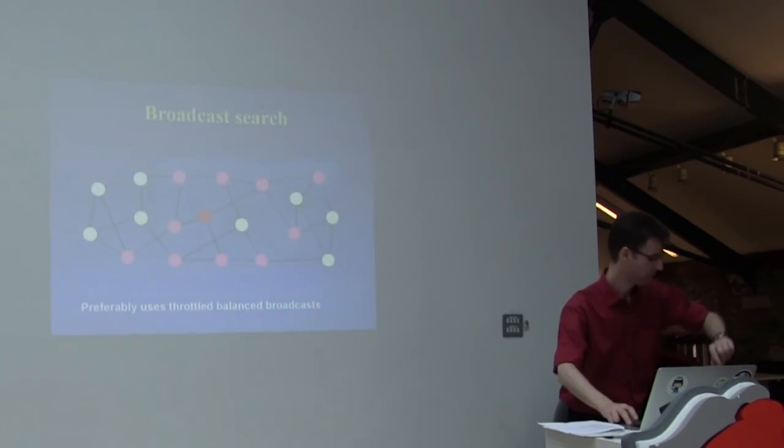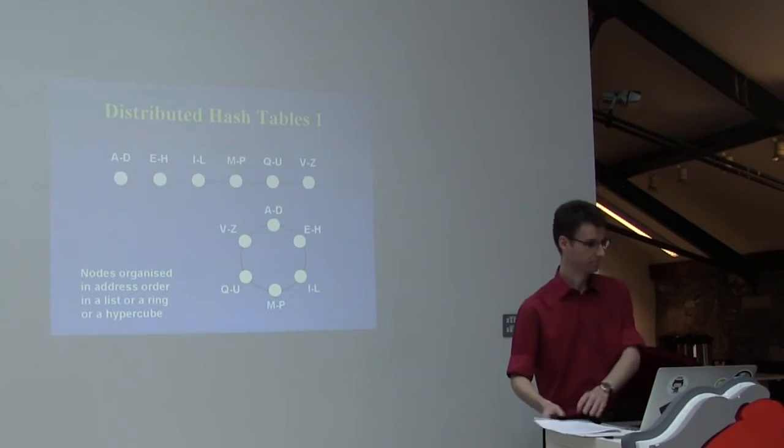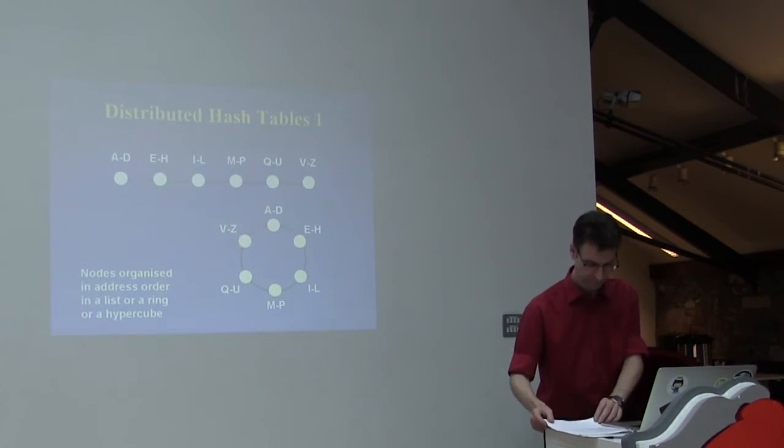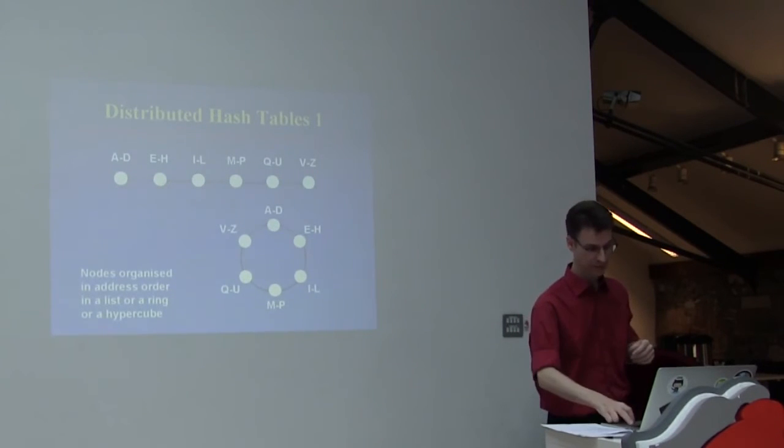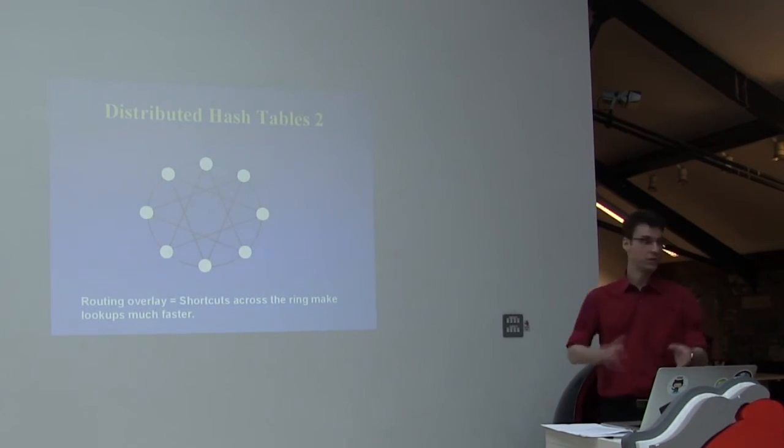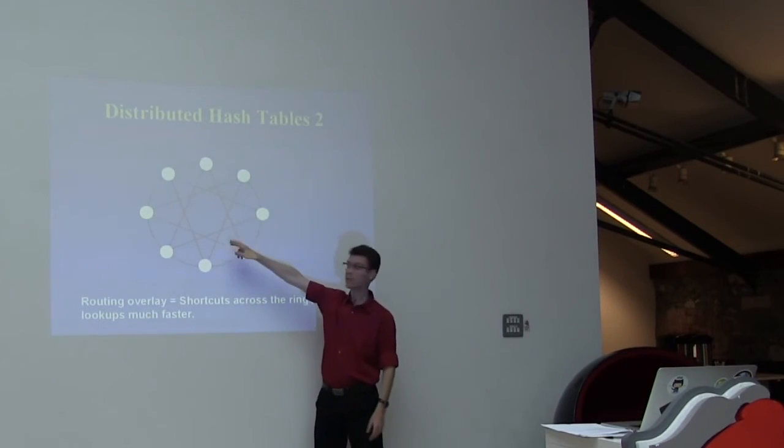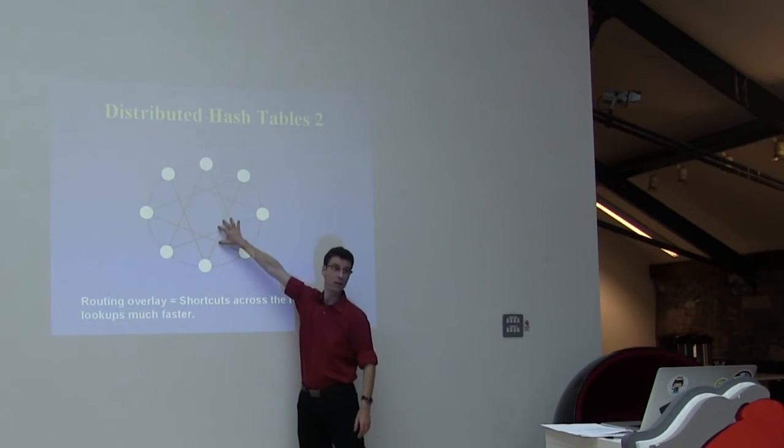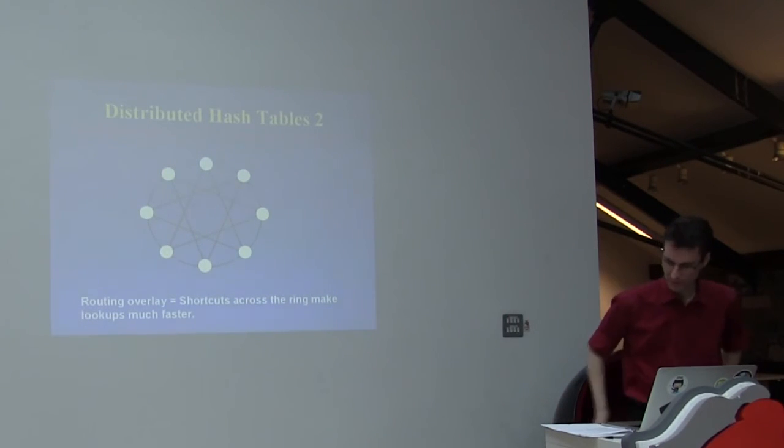Do you want to continue for a few minutes? I can just say one thing more before we go. Of course, going around the ring is very inefficient, so we have shortcuts across the ring. We have lots of links in some smart manner, and those links we can use to find nodes in a shorter path. These links are the routing overlay.